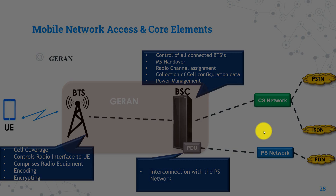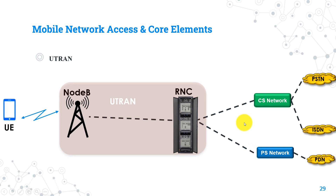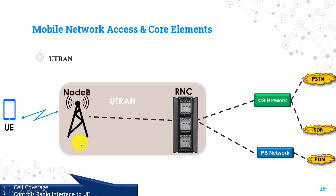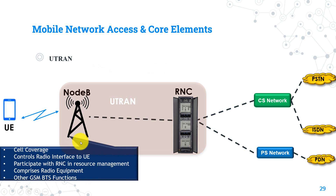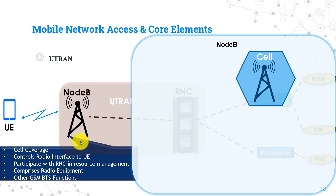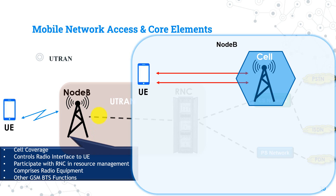Now let's talk about the UTRAN, the radio access part in 3G networks. UTRAN stands for Universal Terrestrial Radio Access Network. It consists of two main nodes: Node B and the RNC. Node B is equivalent to the GSM BTS — its function is cell coverage and it is the first contact with user equipment. It performs air interface processing like channel coding, rate adaptation, spreading, synchronization, and power control.